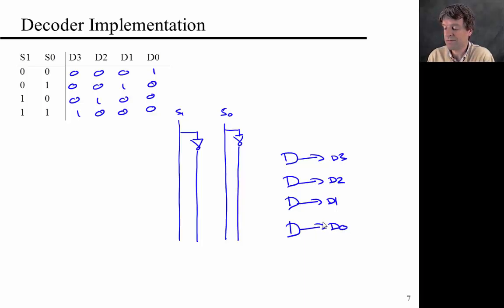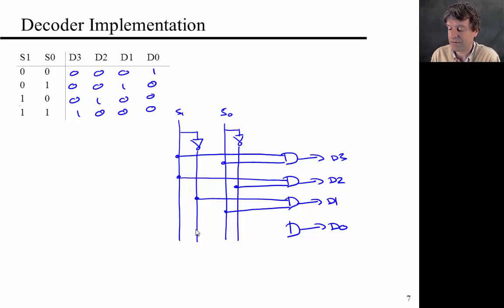So D3 is AND of S1 and S0. D2 is the AND of S1 and not S0. And then D0 is the AND of not S1 and not S0. This is really simple.